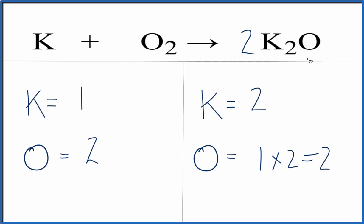But this two applies to the whole compound, so we have two times two. Now we have four potassium atoms.